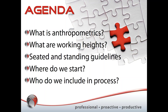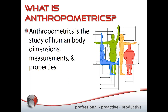So what is anthropometrics? It's a big word that scares people off. But quite simply, it is the study of various human body dimensions, body parts, and different properties. You can see on the graph that we have people sitting and standing — seated height, reach, and so on.